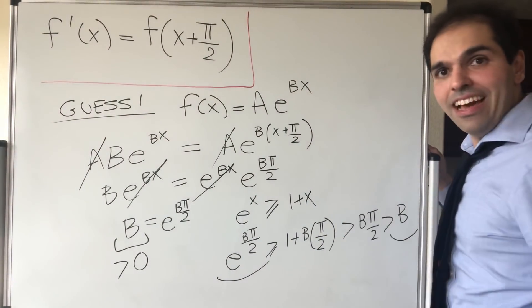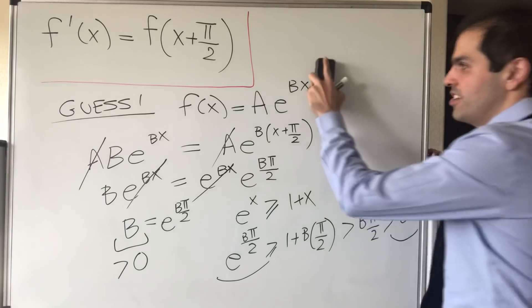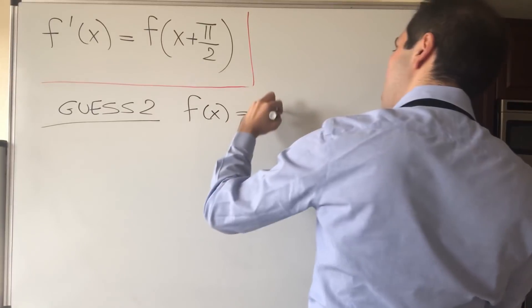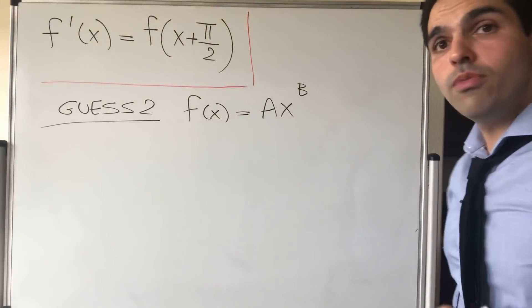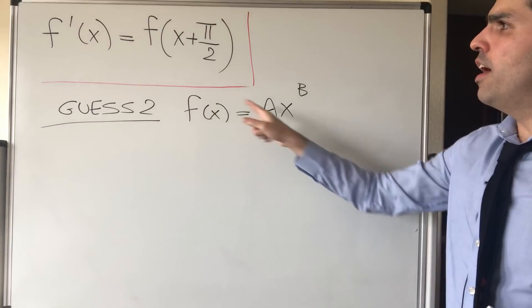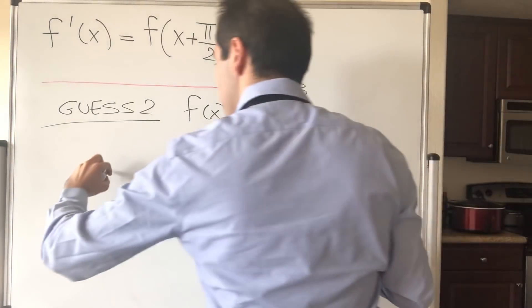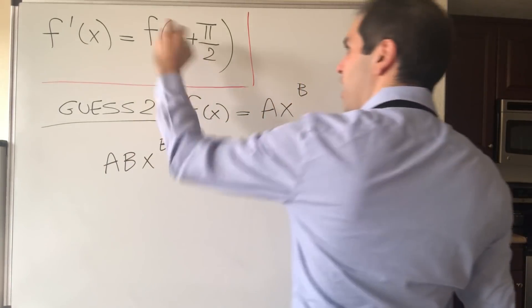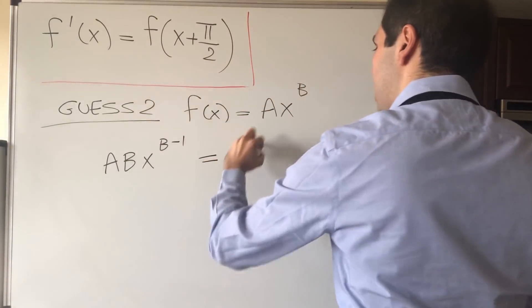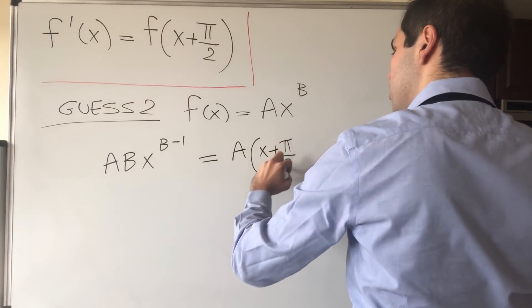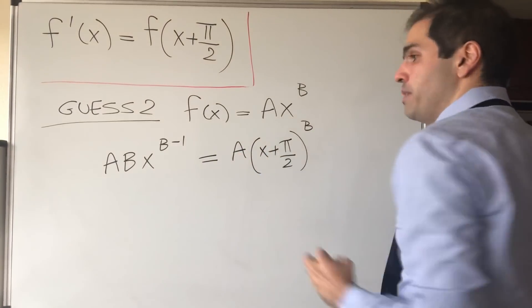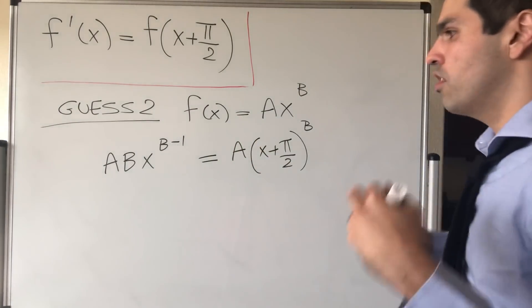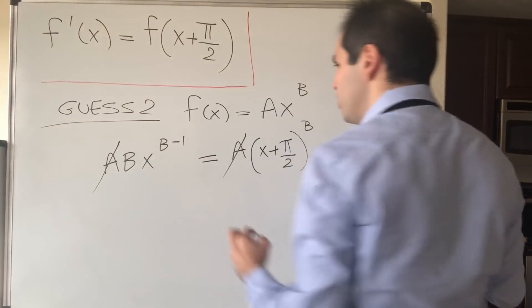So next guess, let's just guess power functions. Guess f(x) equals Ax^B and see what's going on. So now the derivative is just ABx^(B-1). And on the other hand, the function itself is A(x+π/2)^B. And as usual, assume A is non-zero, otherwise the function is zero, and then we can do this.